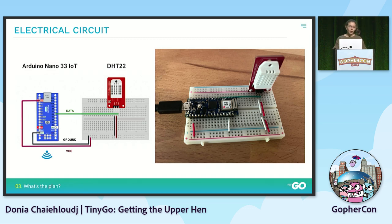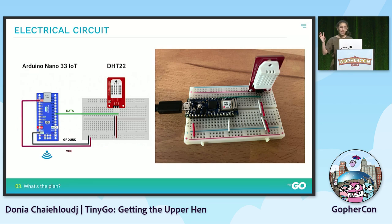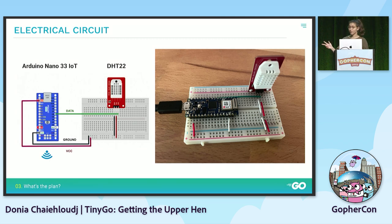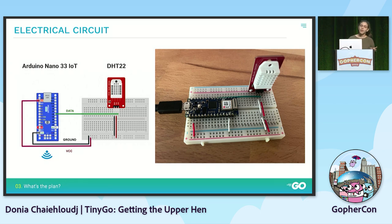Let's deep dive into the project. On one side we have the Arduino Nano 33 IoT - IoT is important here because there is a Wi-Fi antenna that I'm using. The second component is the DHT22, which is a sensor for humidity and temperature, a very basic one on the market. We have only three wires: data for sending instructions to the DHT and receiving measures back, power supply in red, and ground in black.